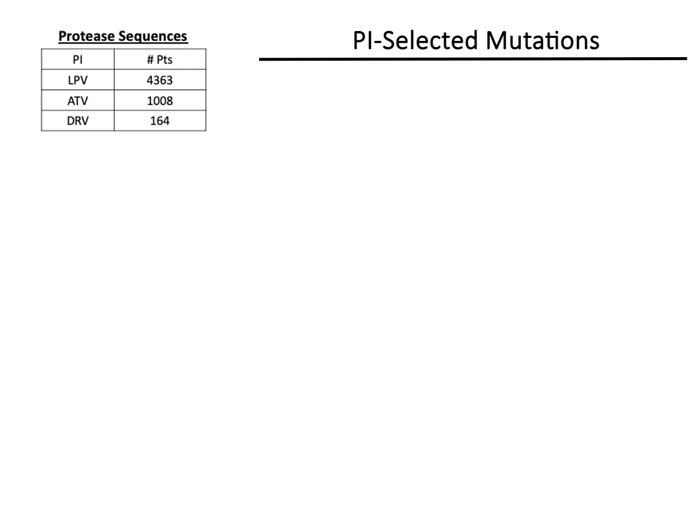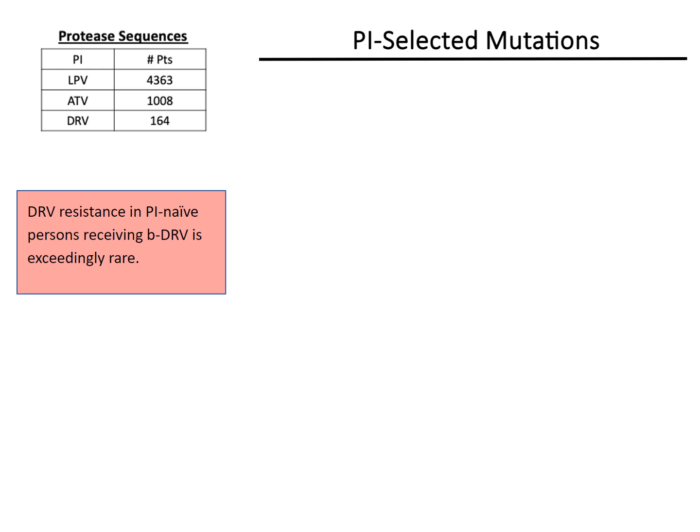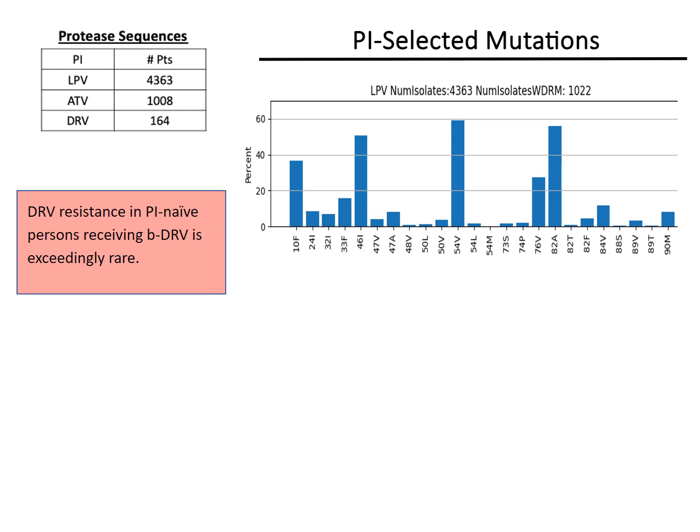The Stanford database contains sequences from about 4,400 persons who received lopinavir as their only PI, about 1,000 persons who received atazanavir as their only PI, and 160 persons who received darunavir as their only PI. There are far fewer published sequences available from persons who received darunavir as their only PI, largely because darunavir has often been used following virological failure of other PIs. Moreover, the development of PI-associated drug-resistance mutations is exceedingly rare in patients receiving darunavir.